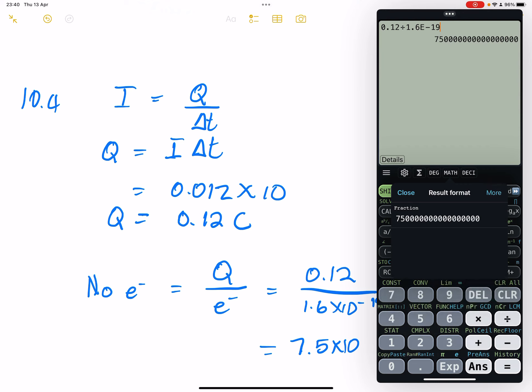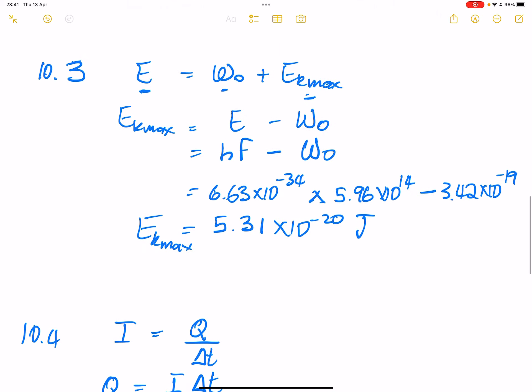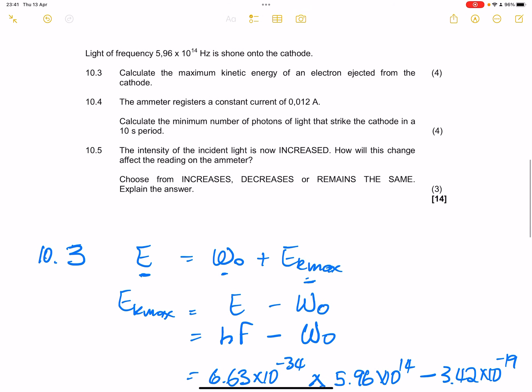I want to change that to scientific form, but for some reason the calculator is not allowing me to. So counting the zeros, that's 1, 2, 3, 4, 5, 6, 7, 8, 9, 10, 11, 12, 13, 14, 15, 16, 17, 18, 19. So you can actually just express that as 7.5 times 10 to the power, I counted 19, but you can verify that for me. So please just verify whether this is so, but the procedure just simply remains the same.